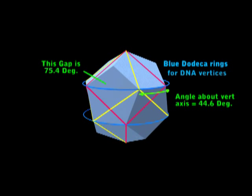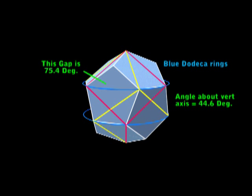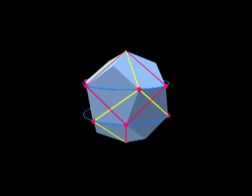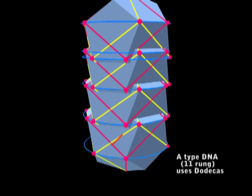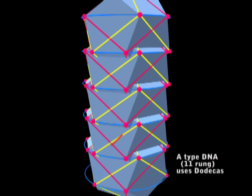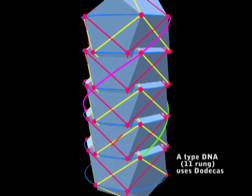The other gap is the 75.4, making 120. Now you can see that these two cubes will give us all the vertices we need. And you can see a string of these cubes will give us the helix of A-DNA.